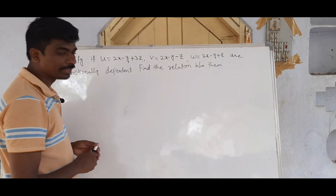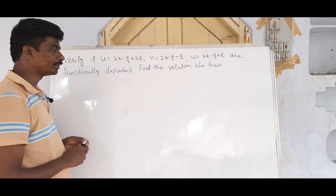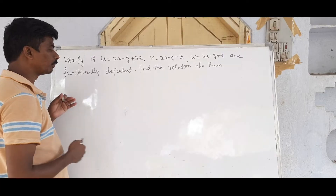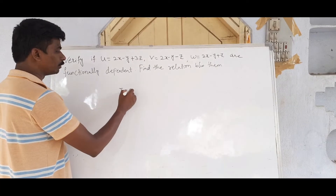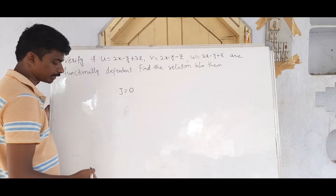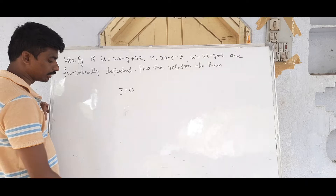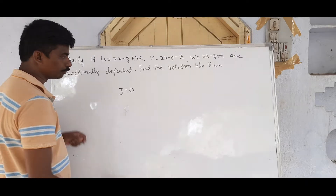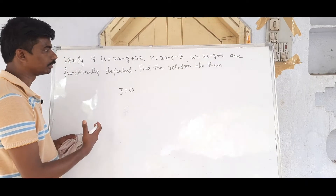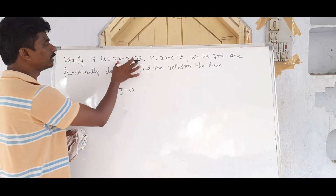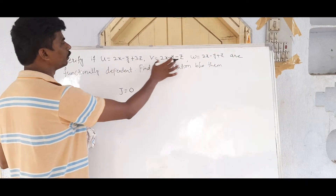When functions are functionally dependent, the Jacobian J equals zero. If J = 0, they are functionally dependent, and we can find the relation between them.